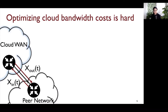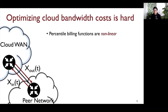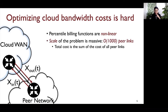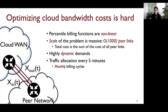But optimizing bandwidth costs of the cloud network is a hard problem. The first reason is that the percentile billing function is non-linear — in fact, this optimization problem is a mixed integer linear program, which is NP-hard. In addition, the scale of this optimization is huge: there are several thousand peer links between the cloud and other networks. Furthermore, demands at the edge of the cloud change rapidly, so allocations have to be made over five-minute intervals, but billing occurs at the end of the month. Edge traffic engineering must allocate traffic at short time scales and hope that by month's end the cost is minimized.